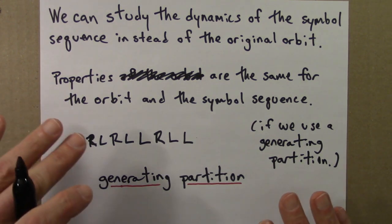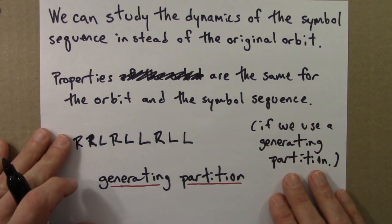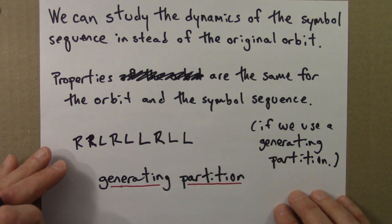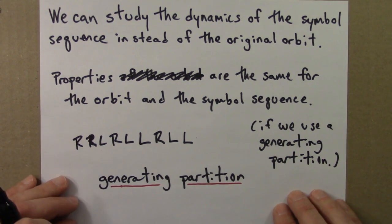In any event, now that we have this idea of symbolic dynamics, let's take a look at what symbolic dynamics look like for the logistic equation with R equals 4.